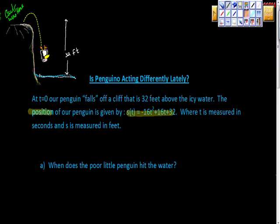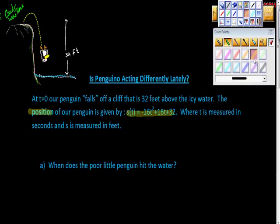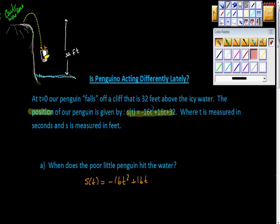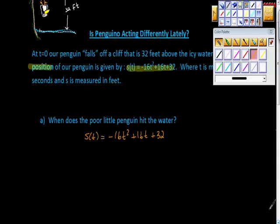And the first part of our question is just an algebra question here. The question asks us, when does the poor little penguin hit the water? Well, we know his position at any time. His position is S of T. His position is negative 16T squared plus 16T plus 32. This is a vertical motion formula. What we want to know is when he hits the water, then his height will equal zero.